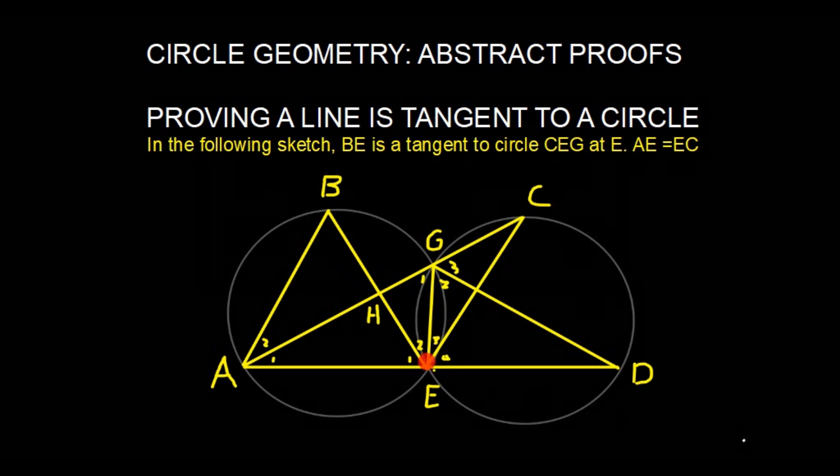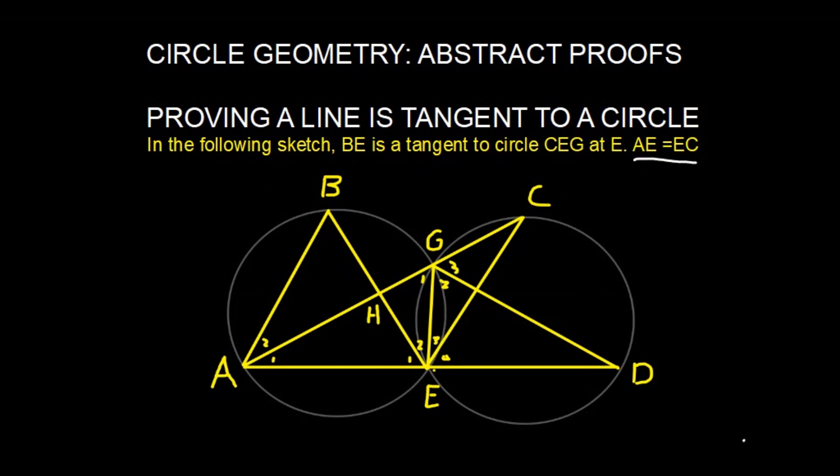And then it says AE is equals to EC. I would like to take a moment to point out that when we have information like this, AE equals EC, always check that it's on your diagram. In this case, it's not, so we need to add it on ourselves quickly.